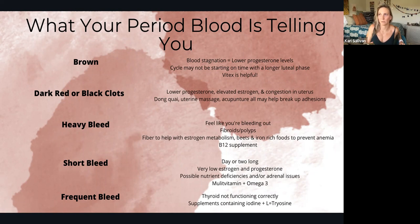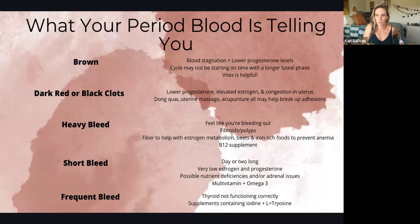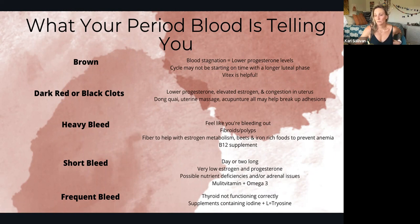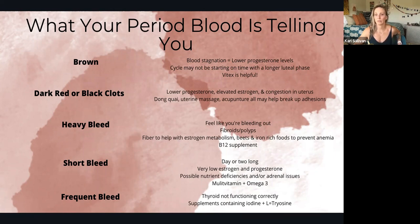Anything less than that is not significant enough to make an impact. Short bleeds — only a day or two long — are a sign that both estrogen and progesterone are very low. This can happen around perimenopause, as hormones are dropping. If you're nowhere near that age, it could be a sign of nutrient deficiency or adrenals not functioning properly. You could try a multivitamin along with omega-3s.